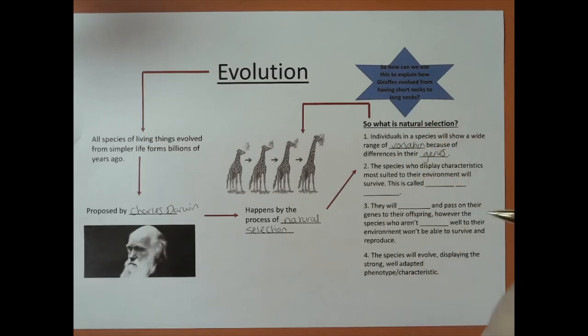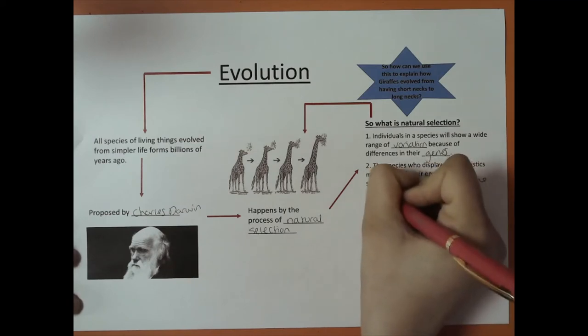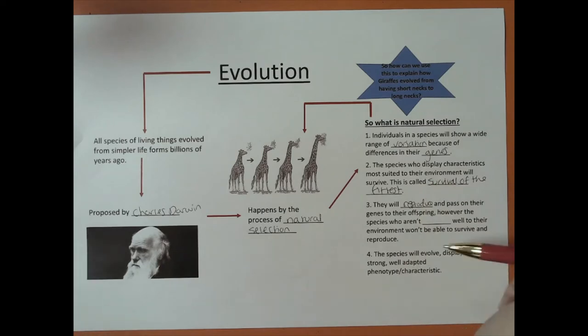The species who display characteristics most suited to the environment will survive. This is called survival of the fittest. They will reproduce and pass on their genes to their offspring.